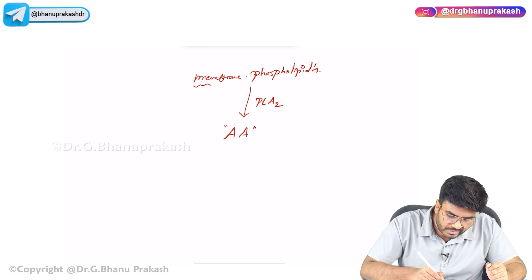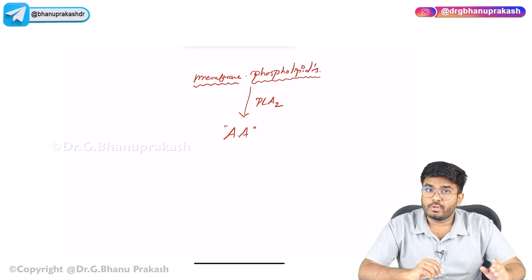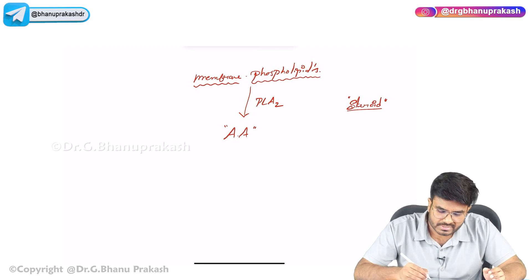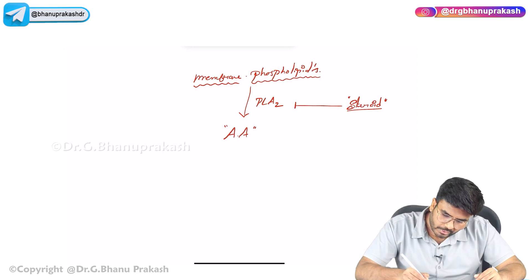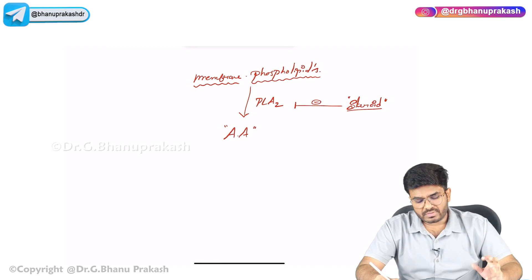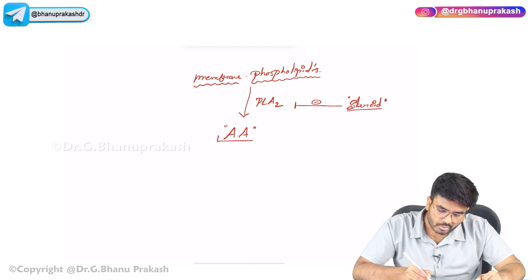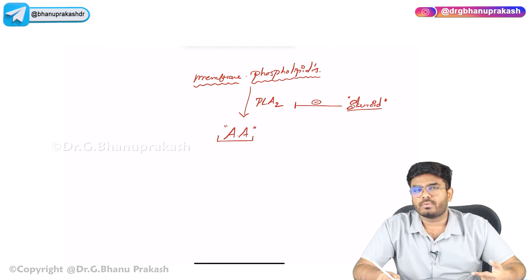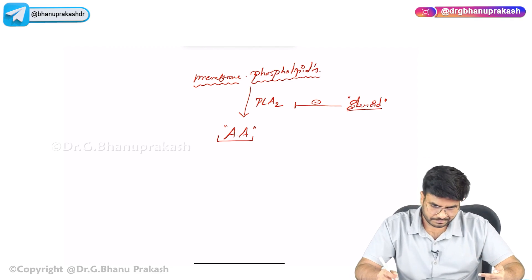Have you ever heard that steroids are immunosuppressants and anti-inflammatory? Do you know why? If you use steroid drugs — dexamethasone, betamethasone, hydrocortisone — the steroids are going to inhibit phospholipase A2. When phospholipase A2 is inhibited, arachidonic acid is not going to be produced. Without arachidonic acid, inflammatory mediators are not going to be produced. That is how steroids inhibit inflammation — they are anti-inflammatory.